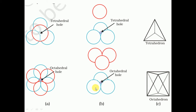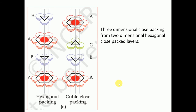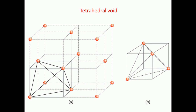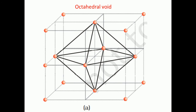If we join the centers of all the atoms surrounding the octahedral hole, it forms an octahedron with eight sides - that's why it is called an octahedral hole. In a three-dimensional crystal structure, we find both tetrahedral and octahedral voids. For HCP, we have hexagonal close-packed two-dimensional layers arranged in an ABAB pattern, and for CCP we have an ABCABC pattern.